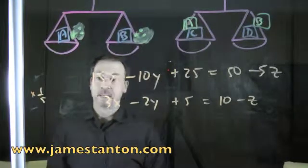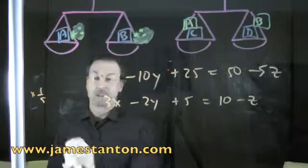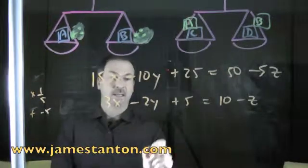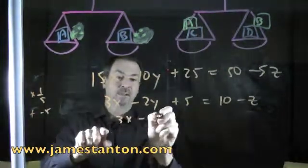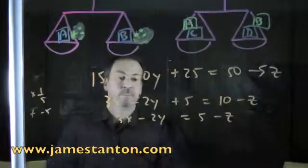What I could do now is I could add a scalar to both sides. Maybe I'll add negative 5 to both sides, in which case I'll have 3x minus 2y equals 5 minus z, which is great.